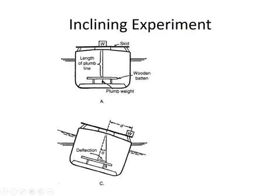What happens then is that pendulum is deflected a certain distance and you can actually measure it on the batten. You can draw a line there.